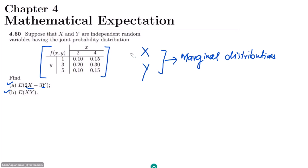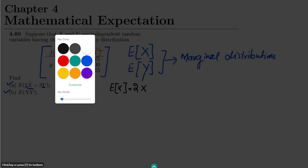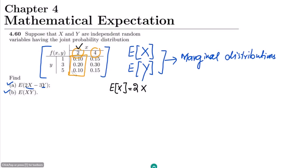After finding the marginal distributions we have to find the expected values, E[X] and E[Y]. In order to find E[X], we take the value of X, which is 2, and multiply it by all the relevant probabilities, then add them all together.